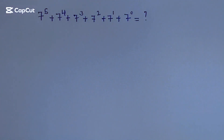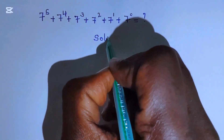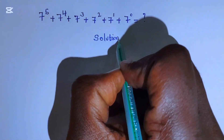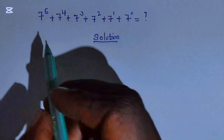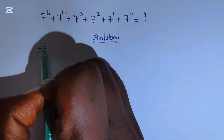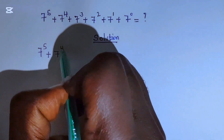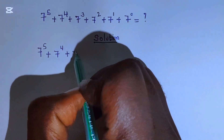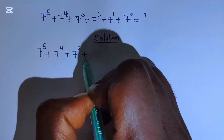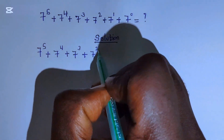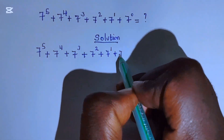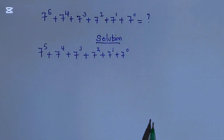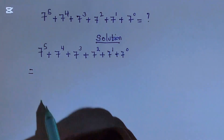Hello everyone, welcome to my channel. Let's provide a solution to this question very quickly. The first thing is to copy what we have: 7 to the power 5, plus 7 to the power 4, plus 7 to the power 3, plus 7 squared, plus 7 to the power 1, plus 7 to the power 0.